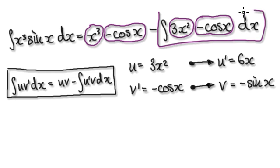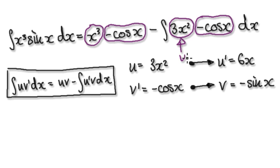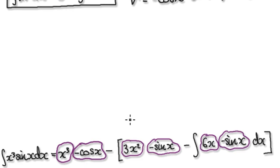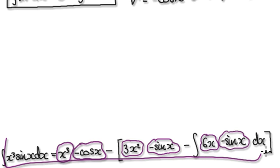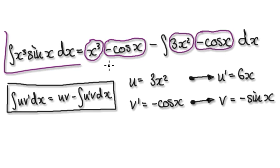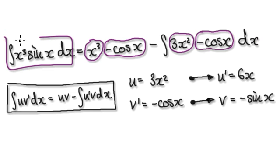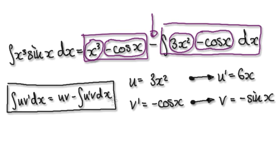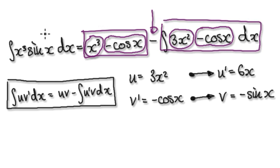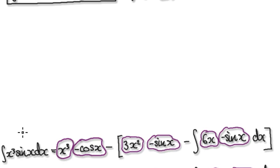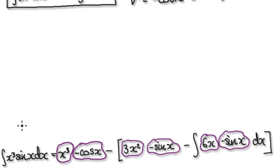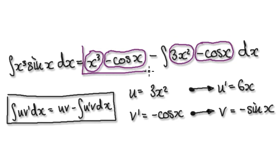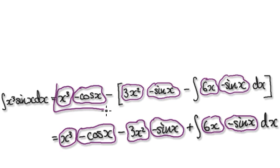So we need to repeat the process and integrate again. We set this to be U and this to be V prime, following the same procedure. Going through the steps, we arrive at a new expression. This whole block here becomes a new term, and then we subtract the integral of the next expression, continuing the chain of integration by parts.